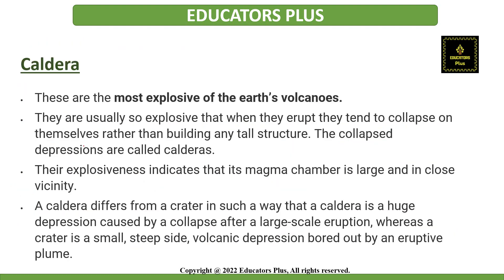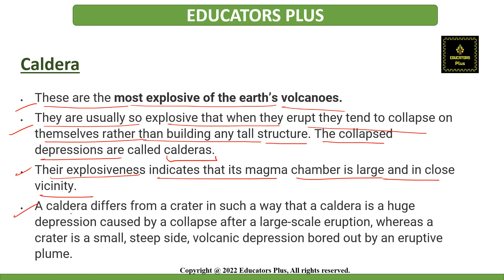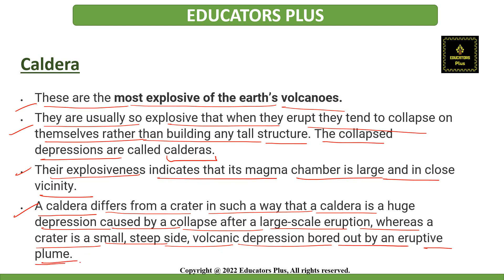The next type is caldera volcanoes. They are the most explosive of Earth's volcanoes — usually so explosive that when they erupt, they tend to collapse on themselves rather than building any tall structure. The collapsed depressions are called calderas. Their explosiveness indicates that the magma chamber is very large and in very close vicinity. Caldera differs from a crater in that a caldera is a huge depression caused by a collapse after a large-scale eruption, whereas a crater is a small steep-sided volcanic depression bored out by an eruptive plume.